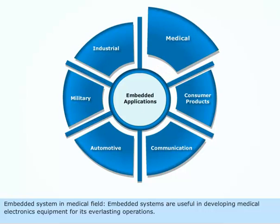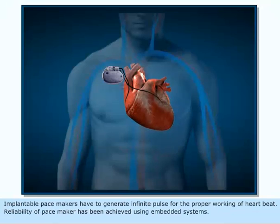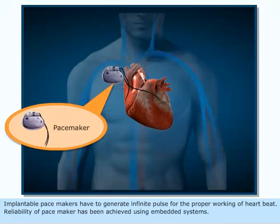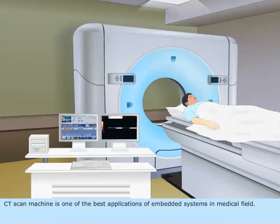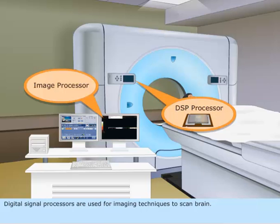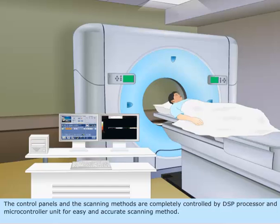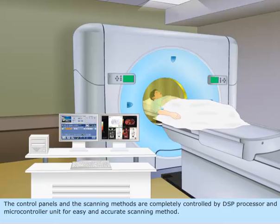Embedded systems in the medical field are useful in developing medical electronics equipment for everlasting operations. Implantable pacemakers have to generate infinite pulses for the proper working of the heartbeat, and their reliability has been achieved using embedded systems. CT scan machines are one of the best applications of embedded systems in the medical field. Digital signal processors are used for imaging techniques to scan the brain, and the control panels and scanning methods are completely controlled by a DSP processor and microcontroller unit for easy and accurate scanning.